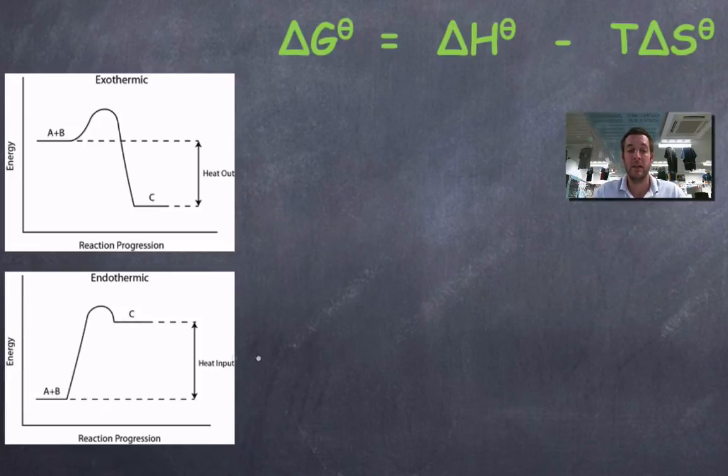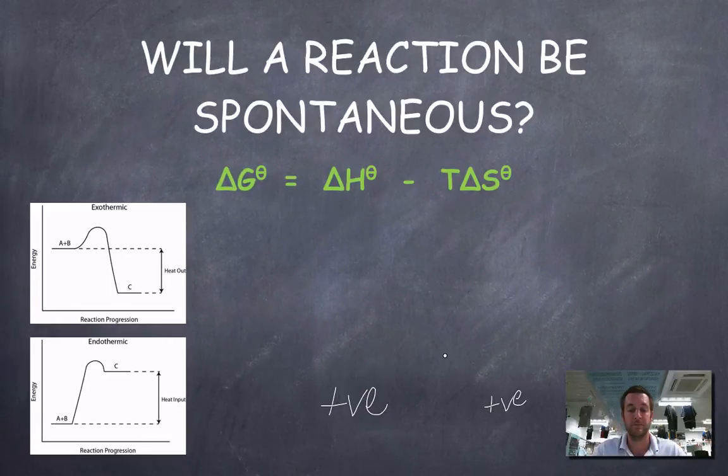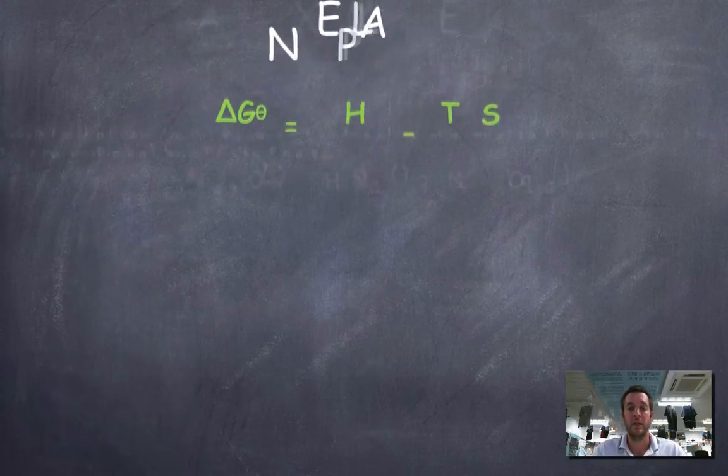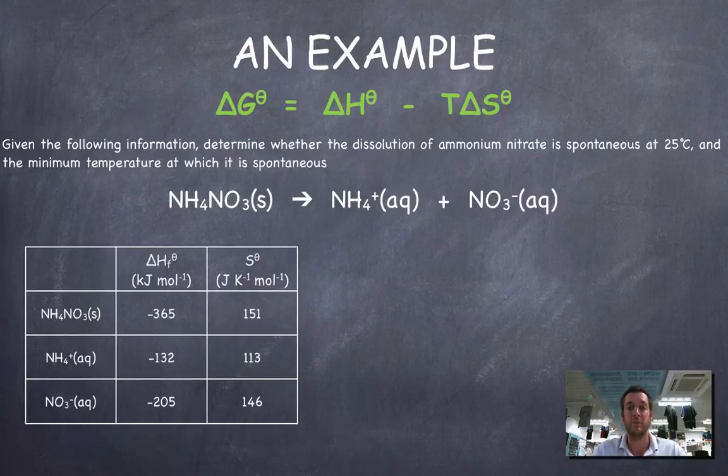If you've got a positive enthalpy change, you're going to need ΔS to be positive because you'll have to subtract a big enough number from this positive number to make it less than zero. In other words, if you've got a positive enthalpy change, the only way you're going to be spontaneous is if your entropy change is also positive and if your temperature is high enough.